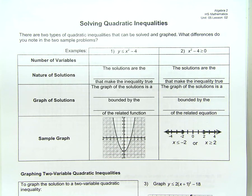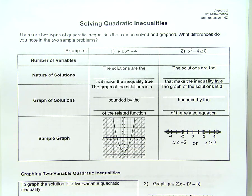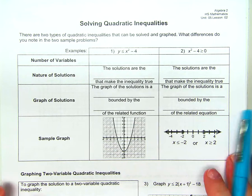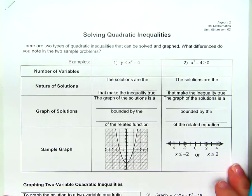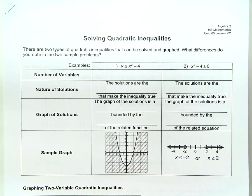Whenever we solve equations compared to inequalities, when we solve an inequality, we're going to end up shading. We've done inequalities a couple of times this year already. Now it's time to do quadratic inequalities. Let's start by filling out this chart on your paper. There are two types of quadratic inequalities that can be solved and graphed.